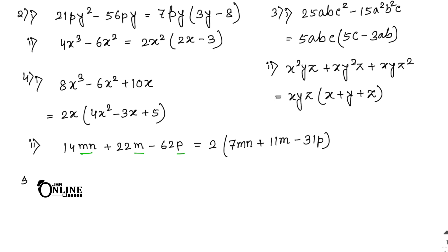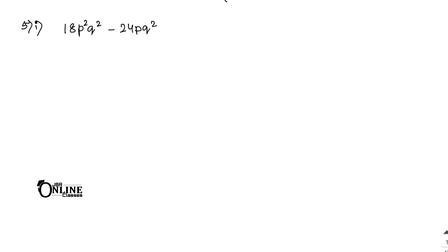Sum number 5.1: 18p²q² - 24pq² + 30p²q. First find the HCF of 18, 24, and 30, which is 6. Then the common variable terms across all three: p is smallest power, q is smallest power. So the common factor is 6pq. Inside the bracket: 3pq - 4q + 5p. The answer is 6pq(3pq - 4q + 5p).